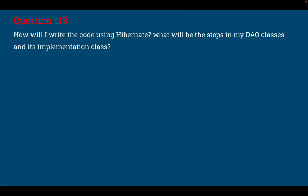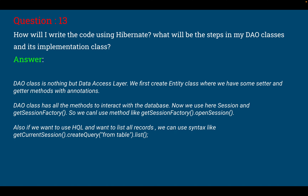Question number 13: the interviewer asked how will I write code using Hibernate and what will be the steps in the DAO class and its implementation. The DAO class is the data access layer. If you are using Hibernate, we first create the entity class where we write setter and getter methods with annotations. The DAO class has all the methods to interact with the database. We use the session and getSession method of Hibernate — methods like getSession.openSession(). If we want to use HQL (Hibernate Query Language) to list all records, we can use the syntax: getCurrentSession().createQuery("from TableName").list().